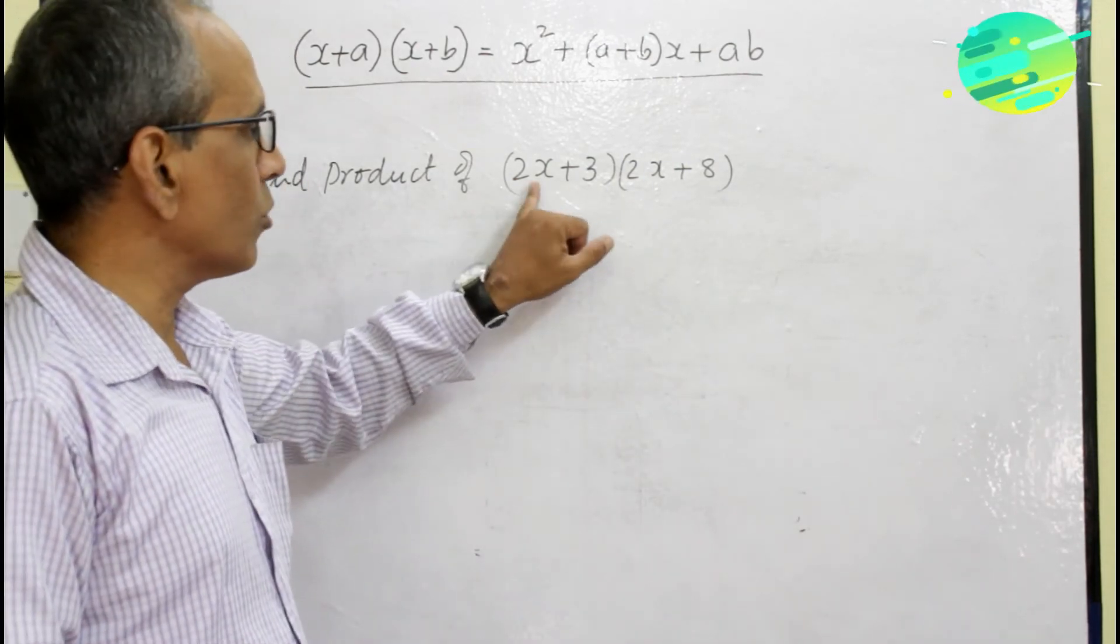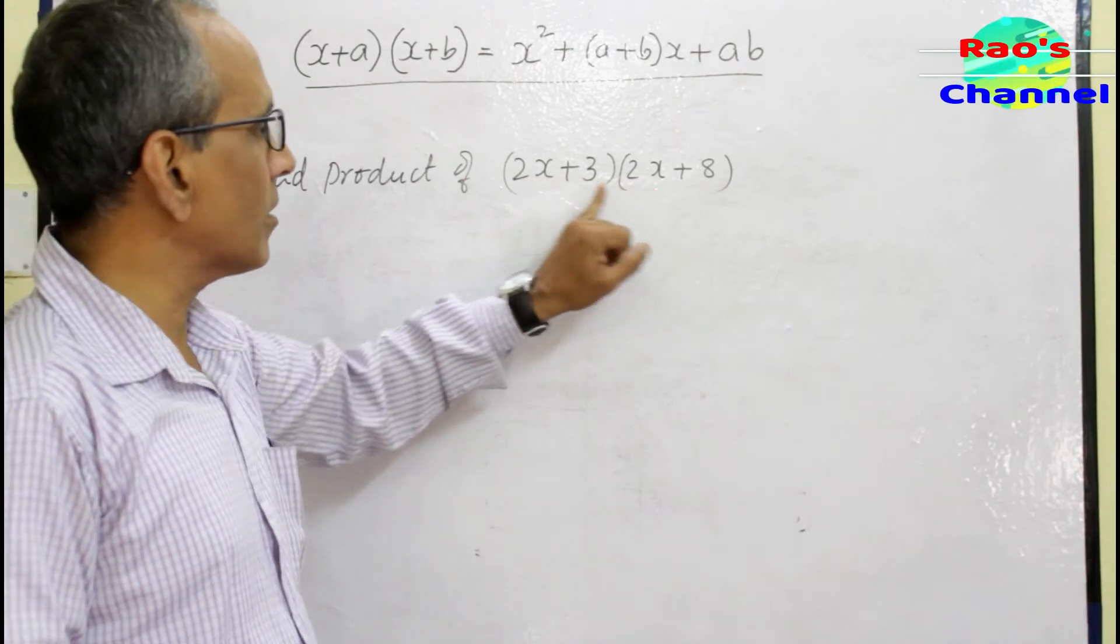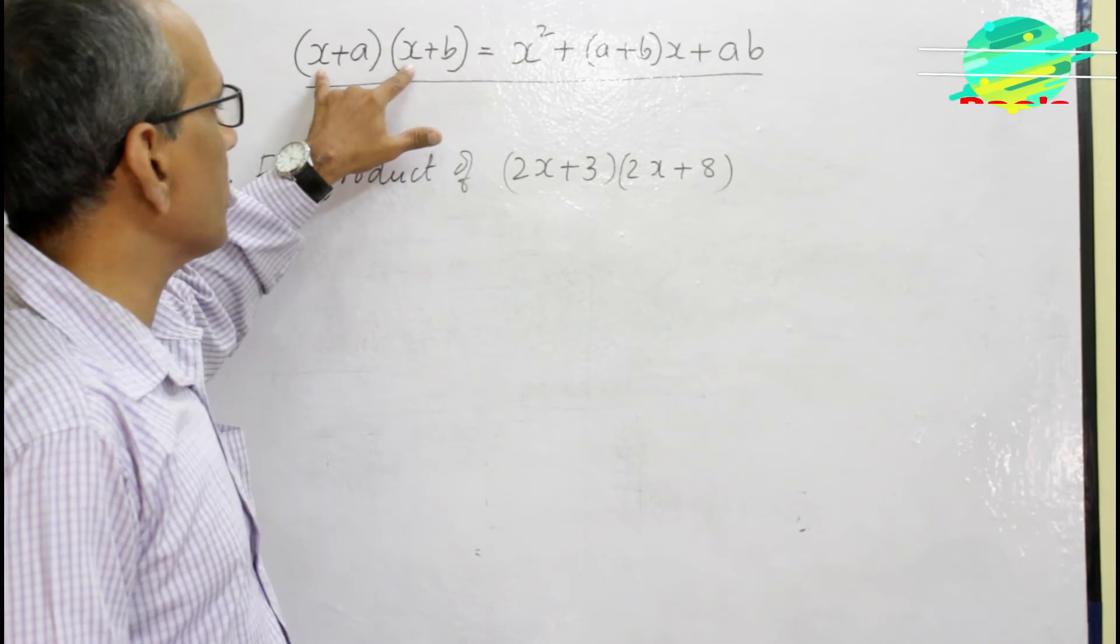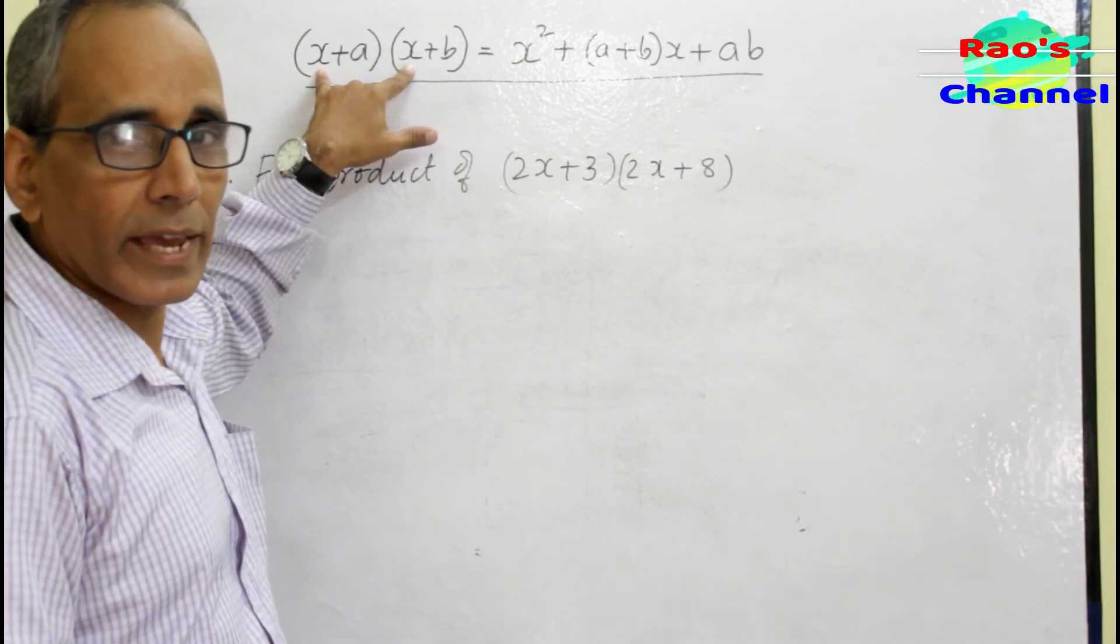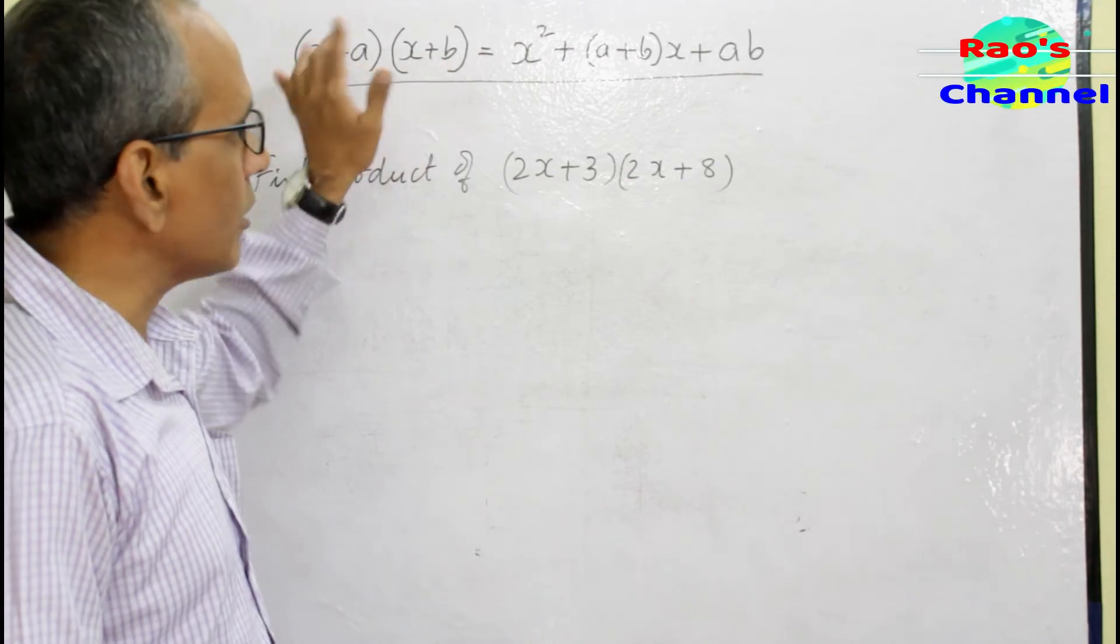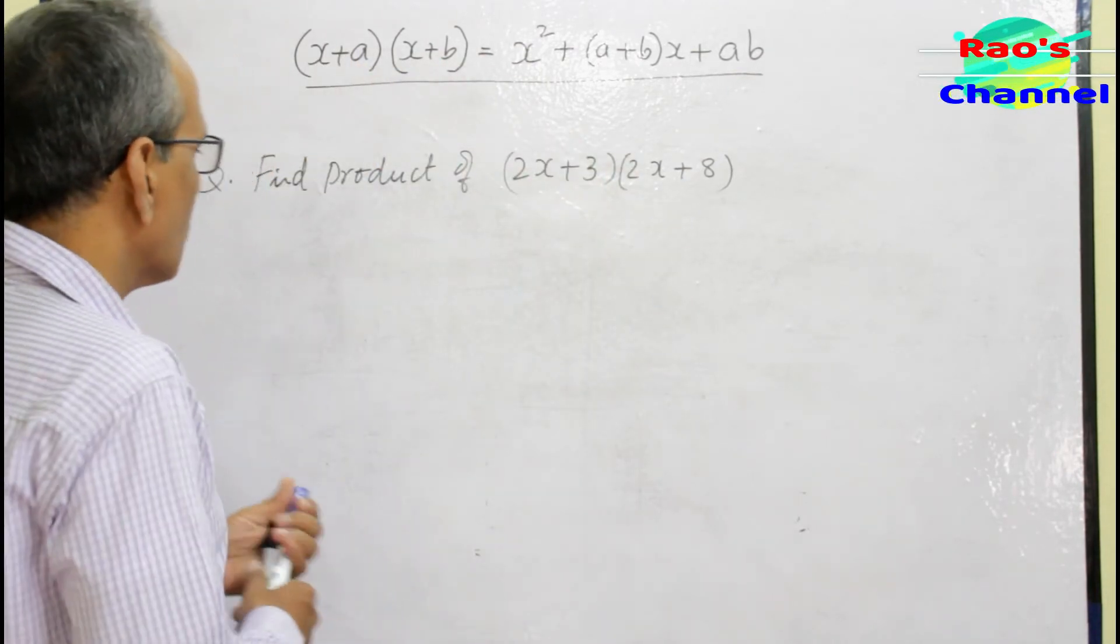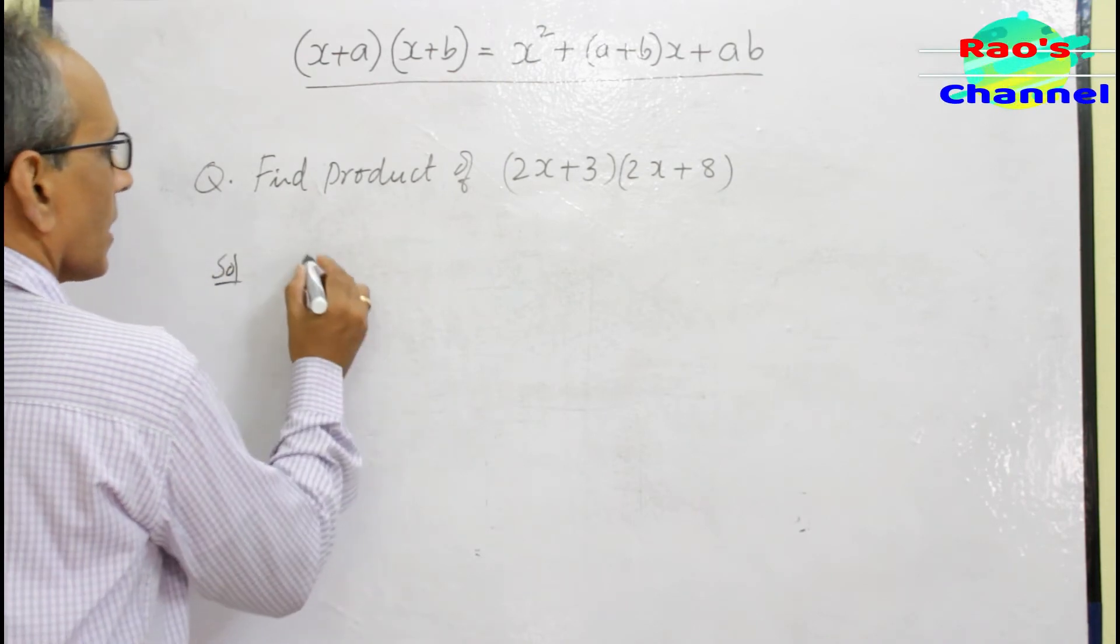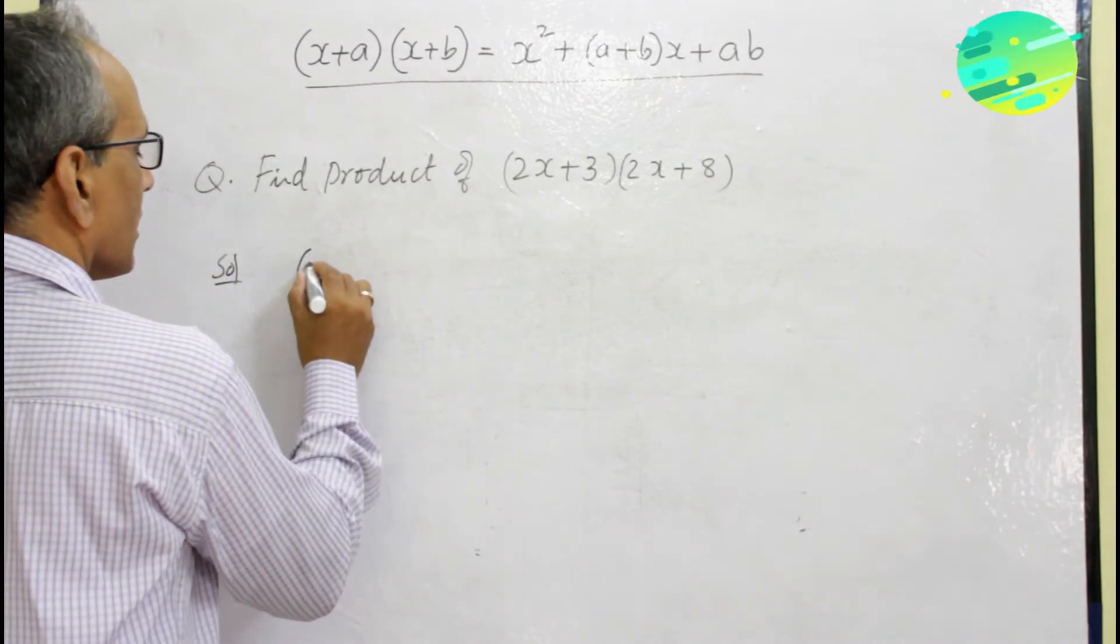This is the question. See in the question, the product of two binomials where the first term is 2x and the latter terms are 3 and 8. In the identity also, the first two terms of the two binomials are x and the latter terms are different, a and b. So I can use this identity here.